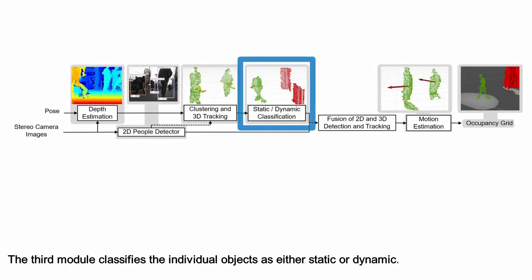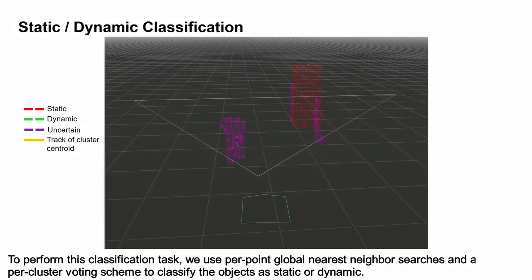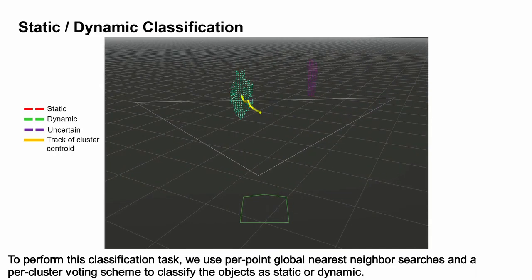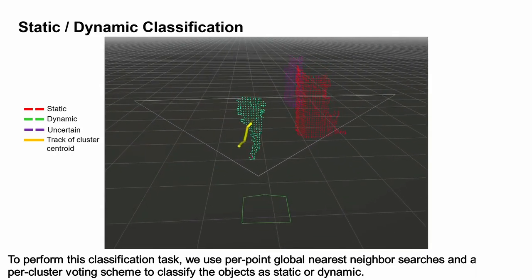The third module classifies individual objects as either static or dynamic. To perform this classification task, we use per-point global nearest neighbor searches and a per-cluster voting scheme to classify the objects as static or dynamic.